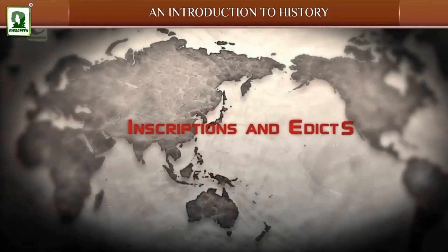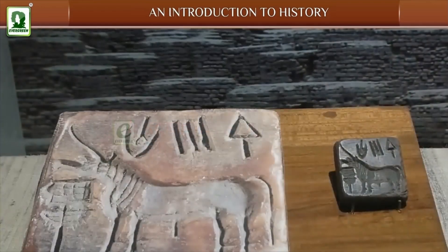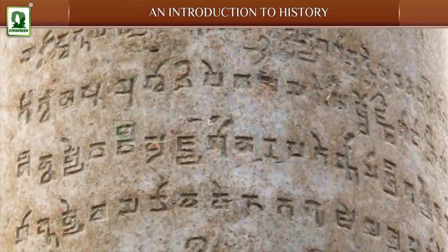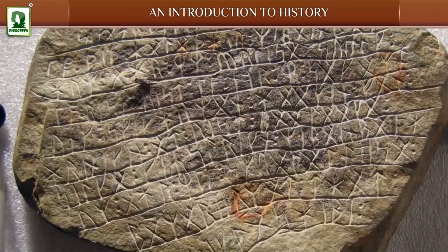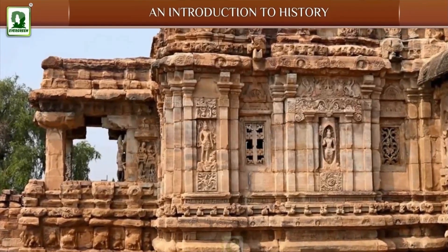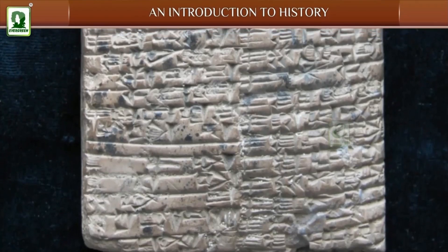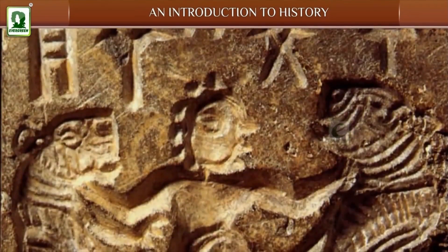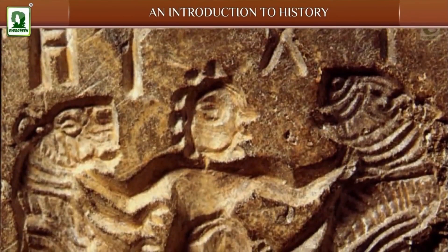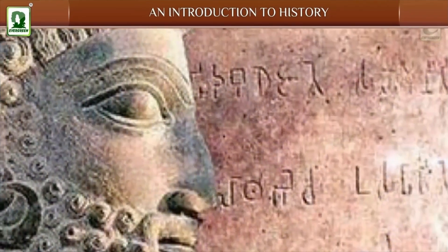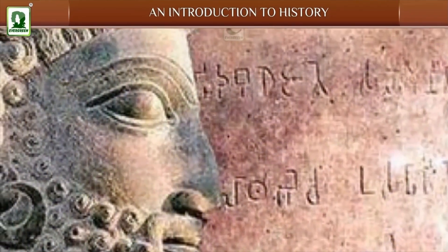Inscriptions and edicts: Inscriptions on hard surfaces like pillars, cave vaults, stones, walls of temples and monuments, and copper or clay tablets often have names and dates of kings and records of their victories in battles. Edicts are the commands issued by the rulers.